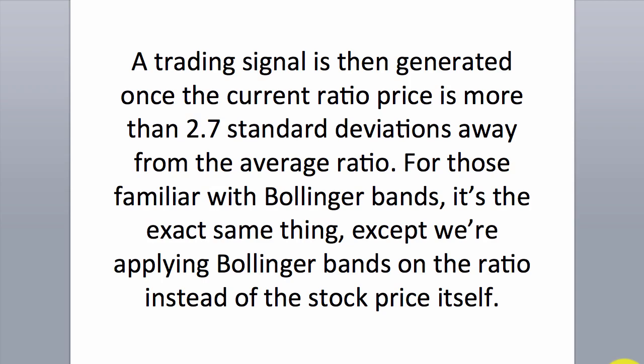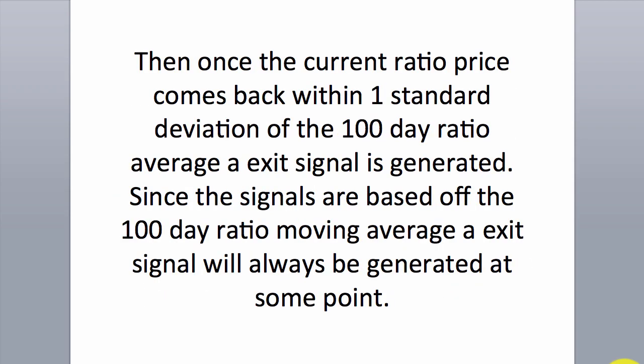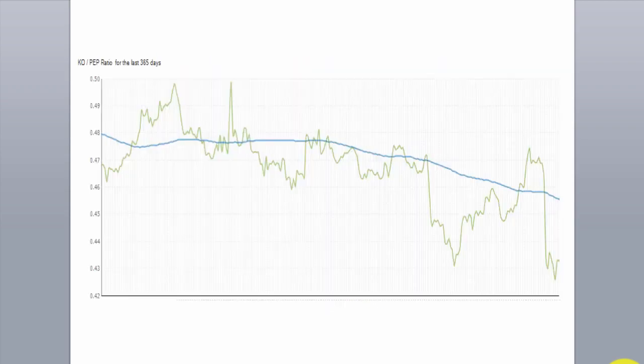For those familiar with Bollinger Bands, it's the exact same concept, except we're applying Bollinger Bands on the ratio instead of the stock price itself. Then once the current ratio price comes back within one standard deviation of the 100-day ratio average, an exit signal is generated. Since the signals are based off the 100-day ratio moving average, an exit signal will always be generated at some point.